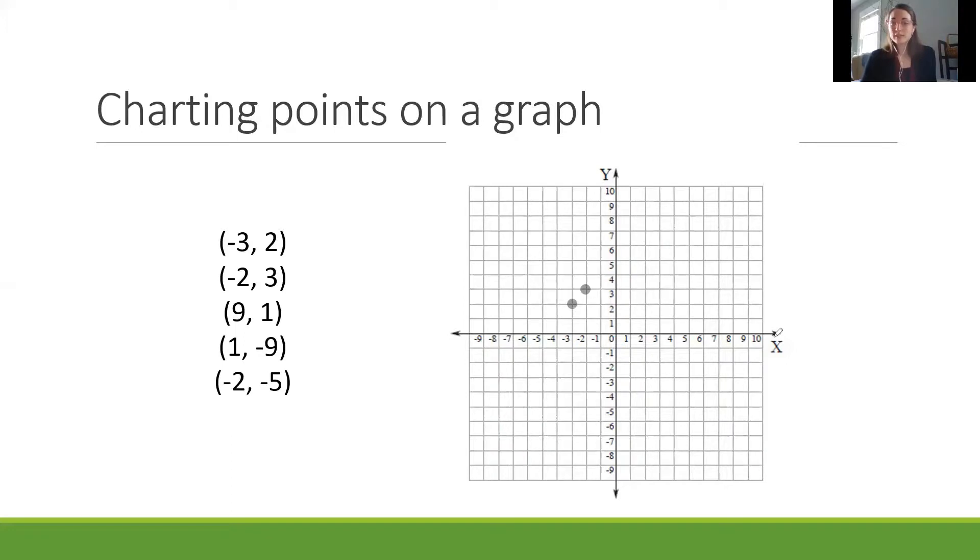Our next one says positive nine, positive one. I'll start at zero, go across the x-axis to find positive nine, then go up to positive one. I'll chart my point there. The next one says positive one, negative nine. Start at zero, go to positive one on the x-axis, and follow the y down until it lines up with negative nine right here.